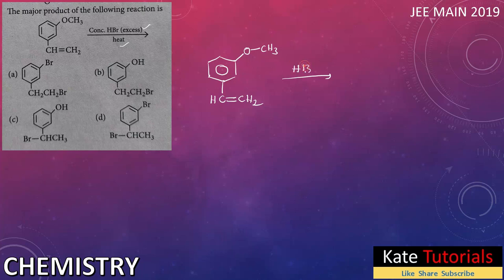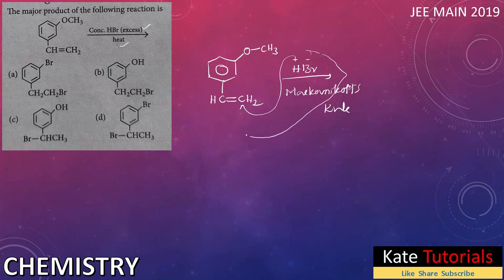When we add concentrated HBr, H is positive and Br is negative — partial positive charge on hydrogen and partial negative charge on bromine. According to Markovnikov's rule, H+ will add to the carbon which has more number of hydrogens. Here, one carbon has two hydrogens while the other has only one hydrogen.